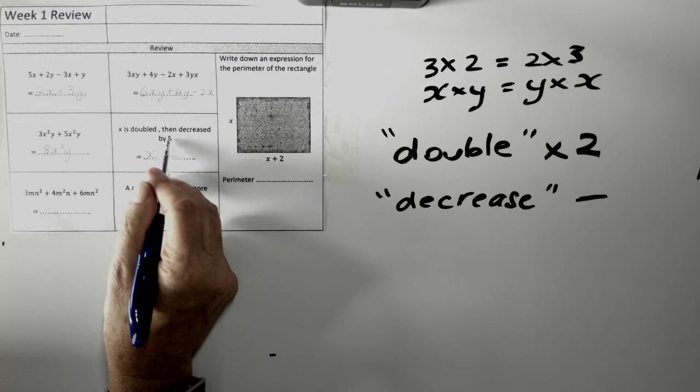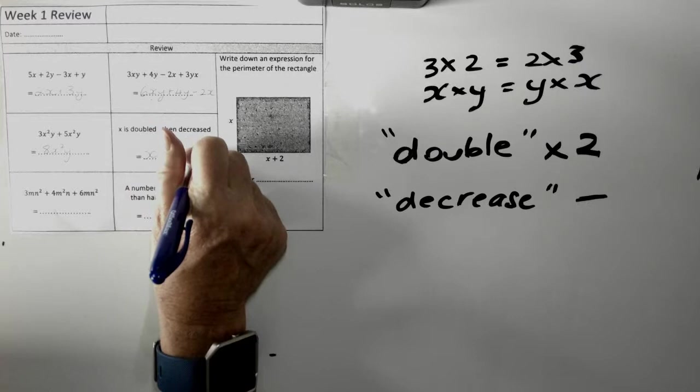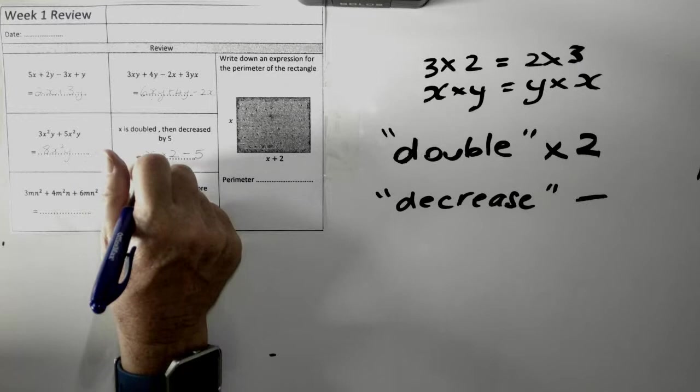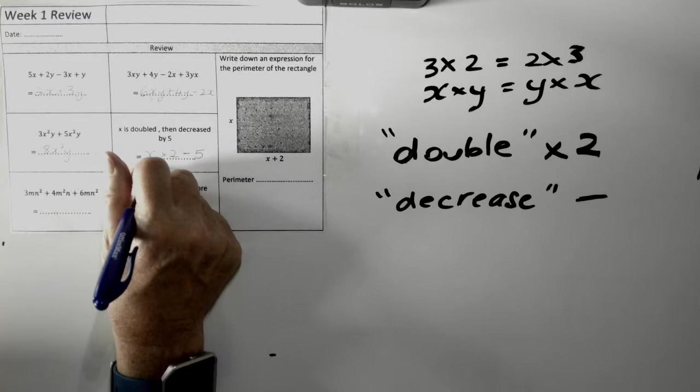X is doubled. Done that. Then, decreased by five. That means that we have to take five off it. X times two minus five. Another way to write it, a sort of tidier way, is we can actually leave out that times, and we can just go two X minus five.